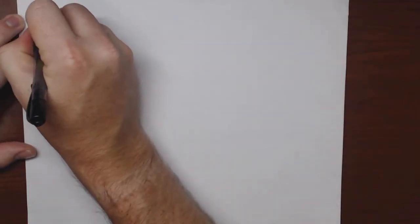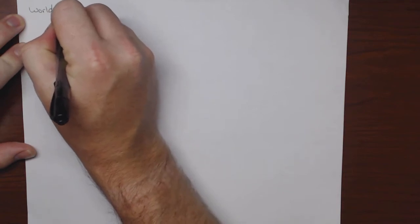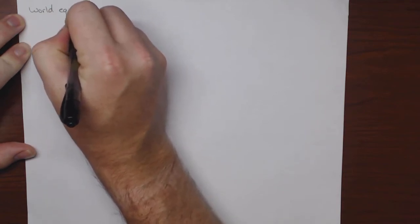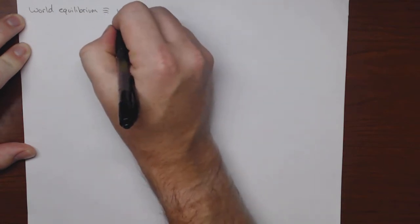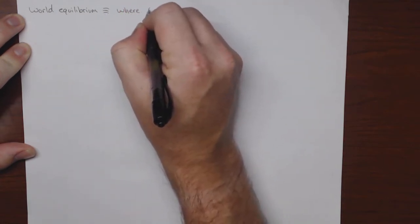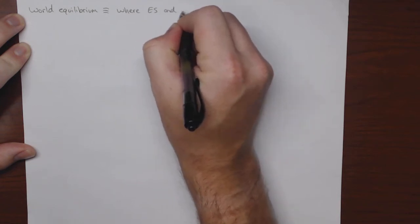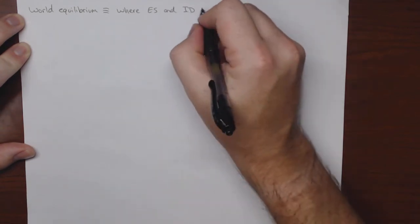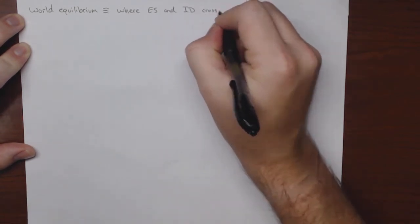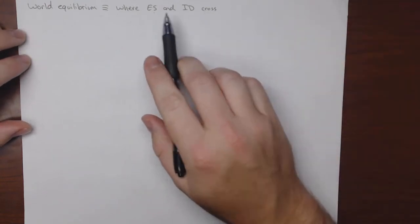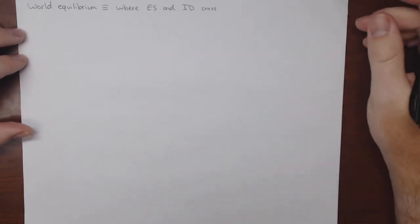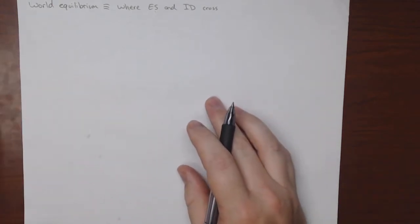World equilibrium is going to be where export supply and import demand cross, just like in normal markets where the supply and demand curves cross. The world equilibrium is where the export supply and the import demand cross, and this is where the world price is ultimately determined.